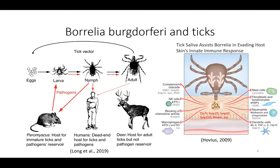Lyme disease is transmitted by tick bites and the Borrelia bacteria are responsible for causing Lyme disease. The life cycle of Borrelia is complex and involves two primary hosts: a vertebrate host and an invertebrate host. In the case of Lyme disease, the primary vertebrate host is typically a rodent. The bacteria are transmitted to the rodent through the bite of an infected tick, and once inside the host, the bacteria can multiply and spread throughout the body.